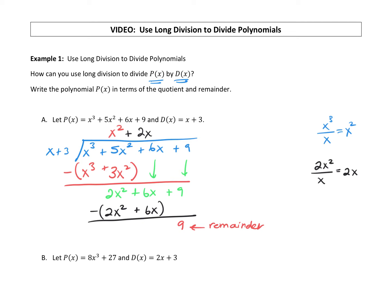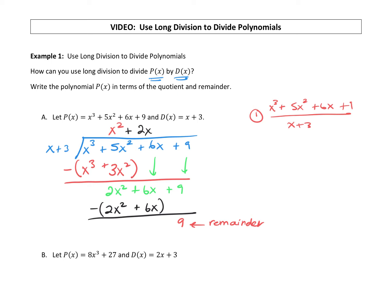To write our answer, there are two ways. The first way: x³ plus 5x² plus 6x plus 9, divided by x plus 3, equals x² plus 2x, plus our remainder 9 divided by the divisor x plus 3. So we write the remainder as a fraction over the divisor.